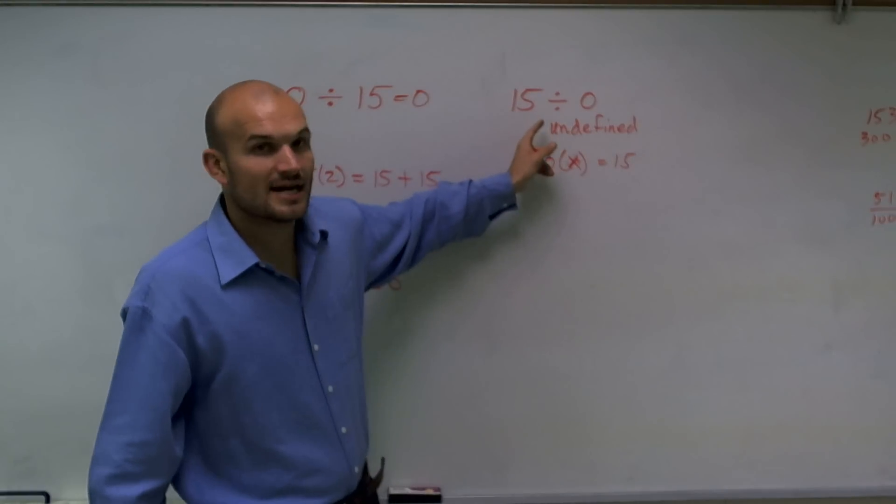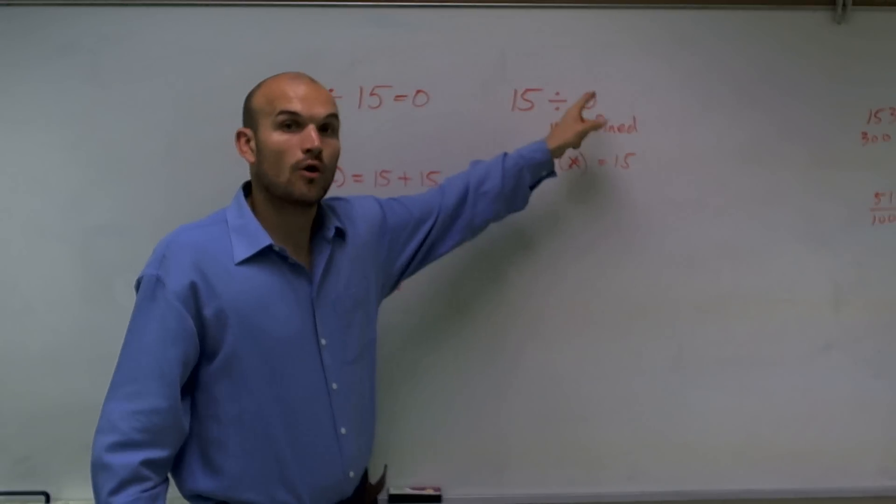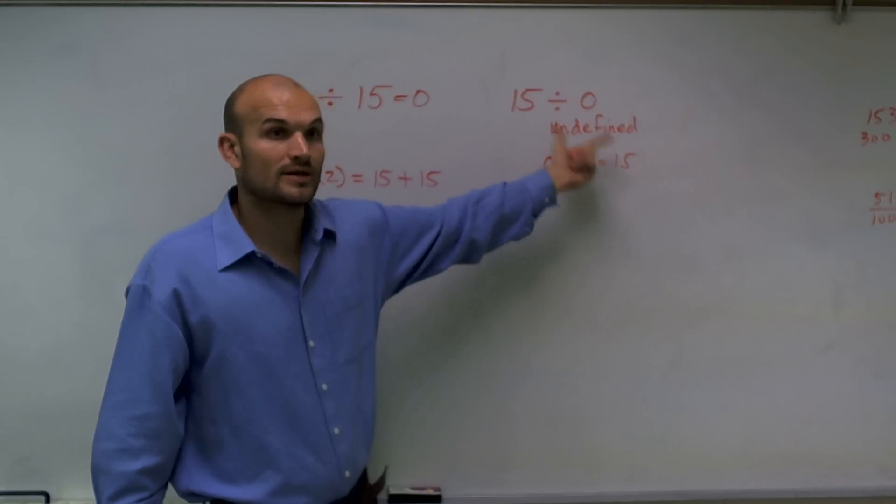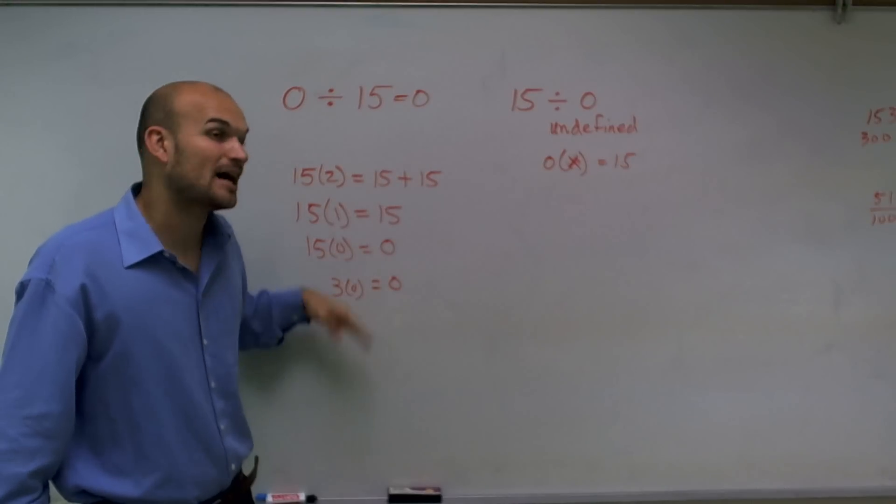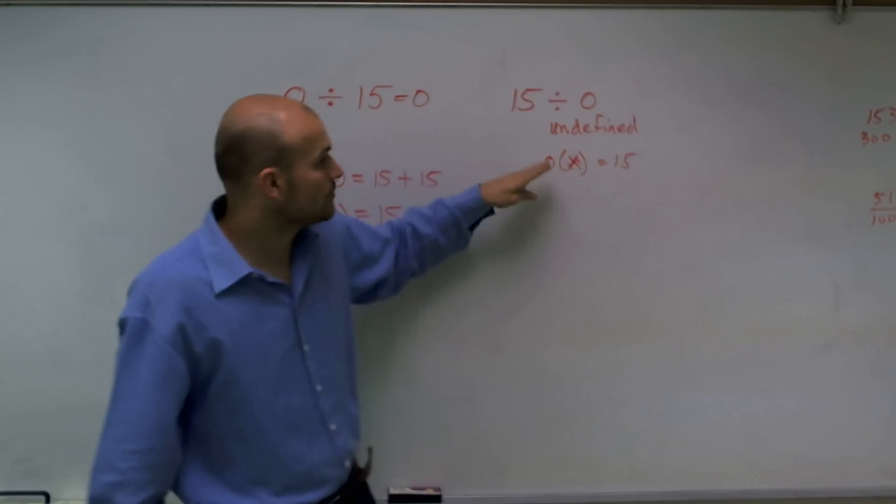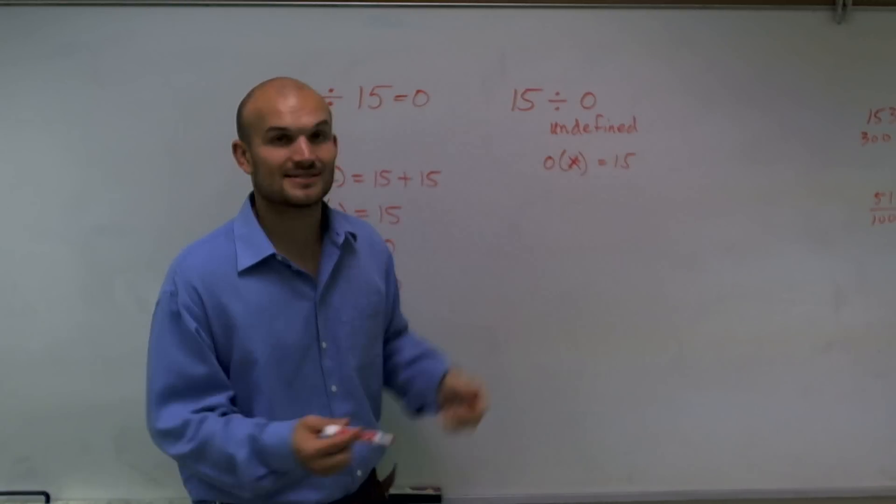So now I look at the next set, 15 divided by 0. How many times does 0 go into 15? Or 0 times what number equals 15? Well, we just explained that 0 times anything always equals 0. So there's no number you can multiply by 0 that's going to get 15, and therefore that's why it's undefined.